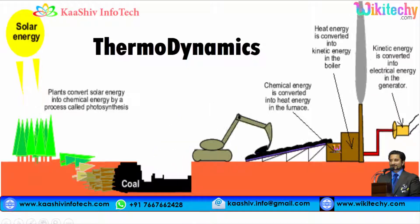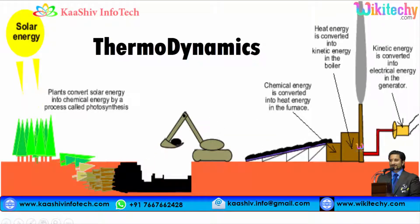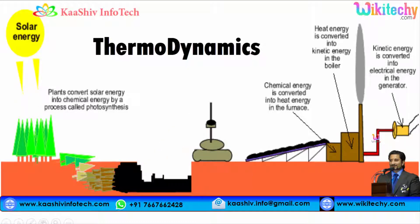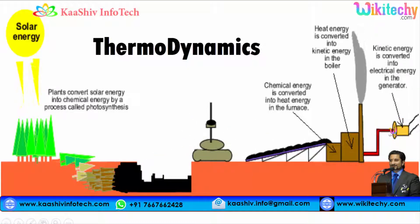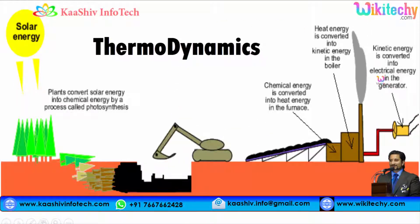The heat energy is converted to kinetic energy in the boiler. The boiler is producing a lot of steam, and via the steam, automatically the generator is rotated and electrical energy is created. This is how the electrical energy is created.